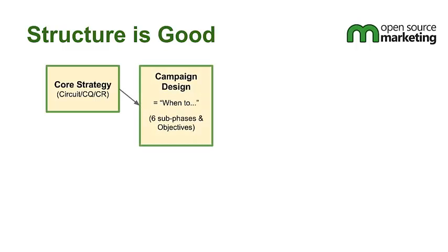Then we get on to the second phase, which is campaign design. I'd really summarize campaign design as being about the 'when' — and also choosing from a plethora of methods, channels, techniques, platforms, and tools. Which should we use? So we decide these are the objectives, loosely connected to these six sub-phases: reach, capture, nurture, closure, and continuity. Campaign design is: this is what we've got to do, and this is how we're going to do it.